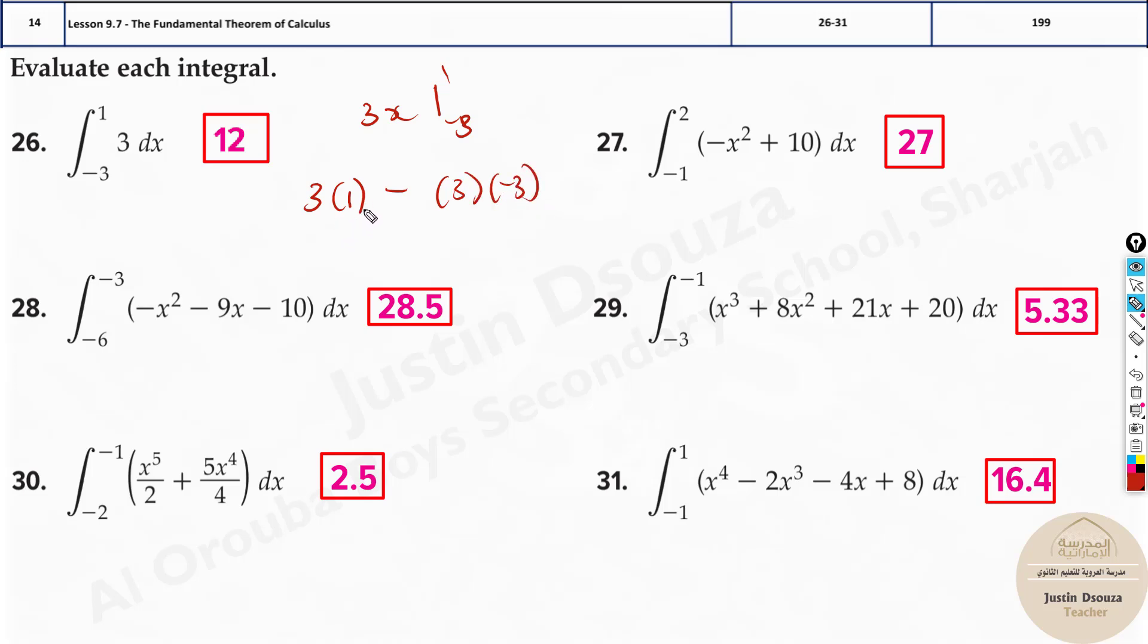That means 3 times 1 upper limit minus 3 times minus 3. So what's the answer? 3 times 1 is 3 minus 3 times 3 is 9, but minus 9 minus will be plus. Answer is 12.